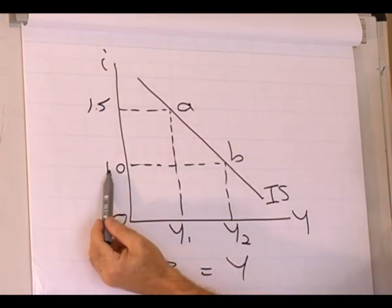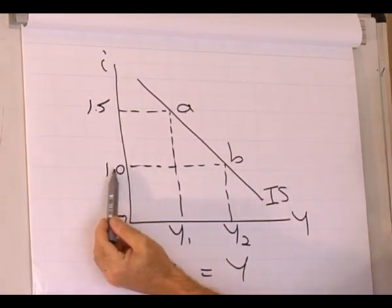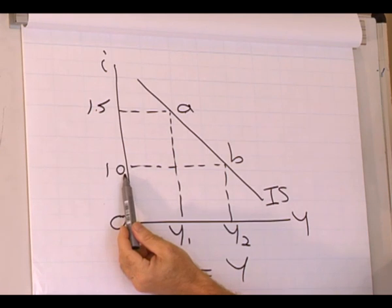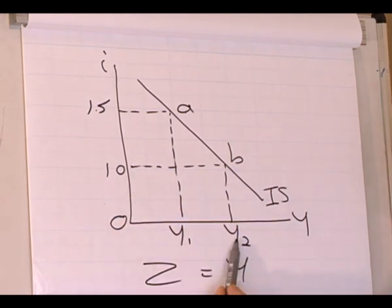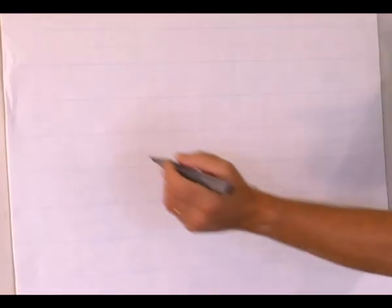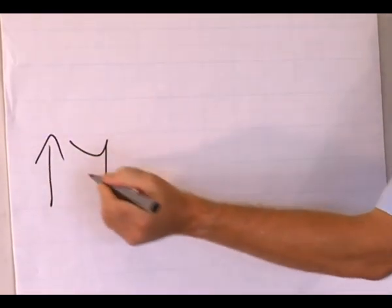So something has happened to the demand for goods and services and the level of output adjusted to the change in demand for goods and services and output increased to Y2. The level of output has increased.